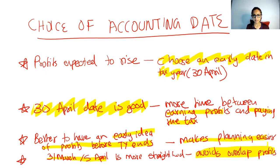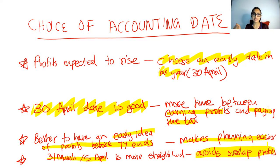From this chapter, when they ask you to link accounting years to tax years and just show profits in tax years like 2017-18, 2018-19 — that's when you know this chapter applies. The main things are: opening year three tax years rules, closing year rules, and the choice of accounting date.